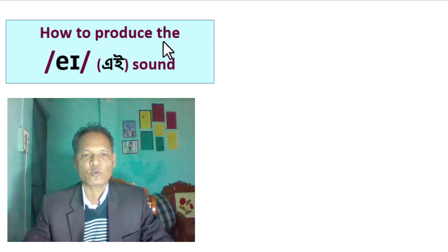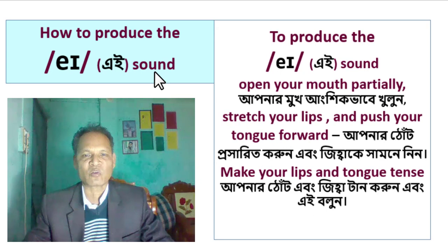How to produce the /eɪ/ sound: To produce the /eɪ/ sound, open your mouth partially, stretch your lips and push your tongue forward, and then make your lips and tongue tense.